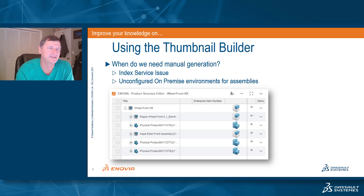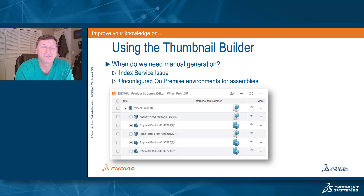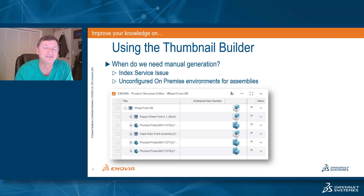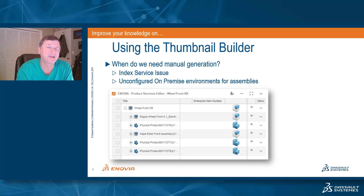Hello everybody. I'd like to spend a few minutes this afternoon and talk about the thumbnail builder ability the system has for generating 2D thumbnails. Where are these used? If you ever open a grid view in the product structure editor or the product explorer, you can turn on the thumbnails and see a quick snapshot in 2D of all the various components that make up a structure. They also appear in the property cards, the Viola property card and so forth.